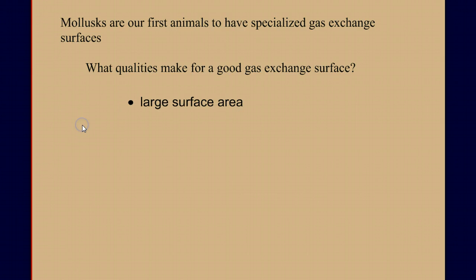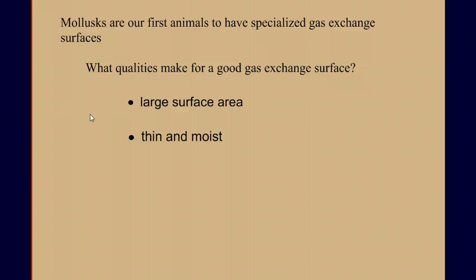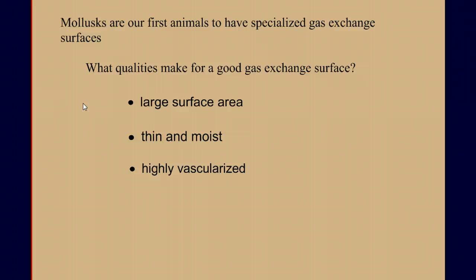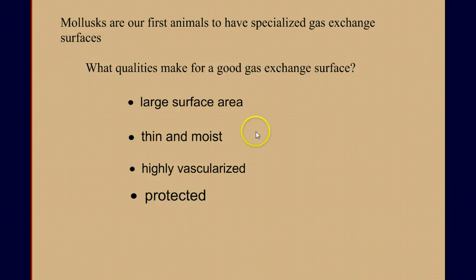So what makes for a good gas exchange surface? It's got to have a large surface area across which to make exchanges. If you think about the branches within the lungs or the folds within gills, we see large surface area. Up until now, animals we've looked at have used their skin as their gas exchange surface. Surfaces good for gas exchange need to be thin, because we don't want to diffuse gases across multiple layers, and typically moist tissues allow gases to move more easily than dry tissues. They also need to be highly vascularized, meaning good blood flow, to deliver gases to all parts of the body and bring waste gases like carbon dioxide back to the exchange surface. And if you have a large, thin, moist surface with large blood flow, it needs to be protected — maybe inside a rib cage, inside a shell, or tucked underneath the operculum in a fish.